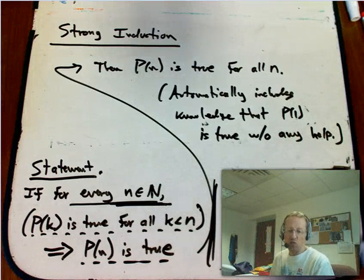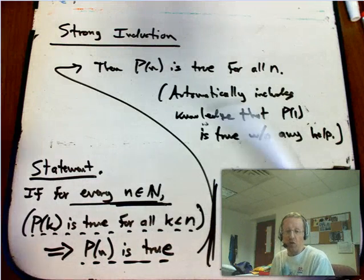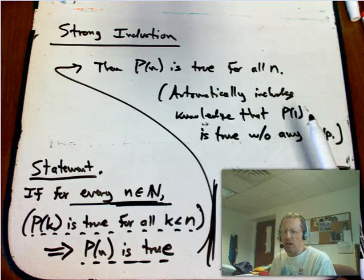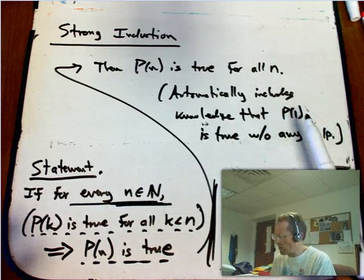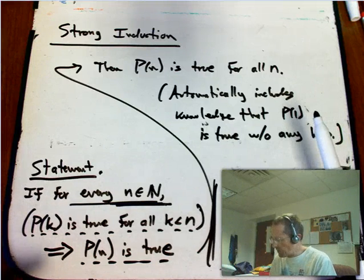It automatically includes the knowledge that P(1) is true without any help. So there are going to be rare cases where you prove strong induction and the base case falls out automatically. But I would never trust that. I would never ever trust that. You might as well do the base case. If you can't do the base case separately, then you probably don't understand what you're doing.